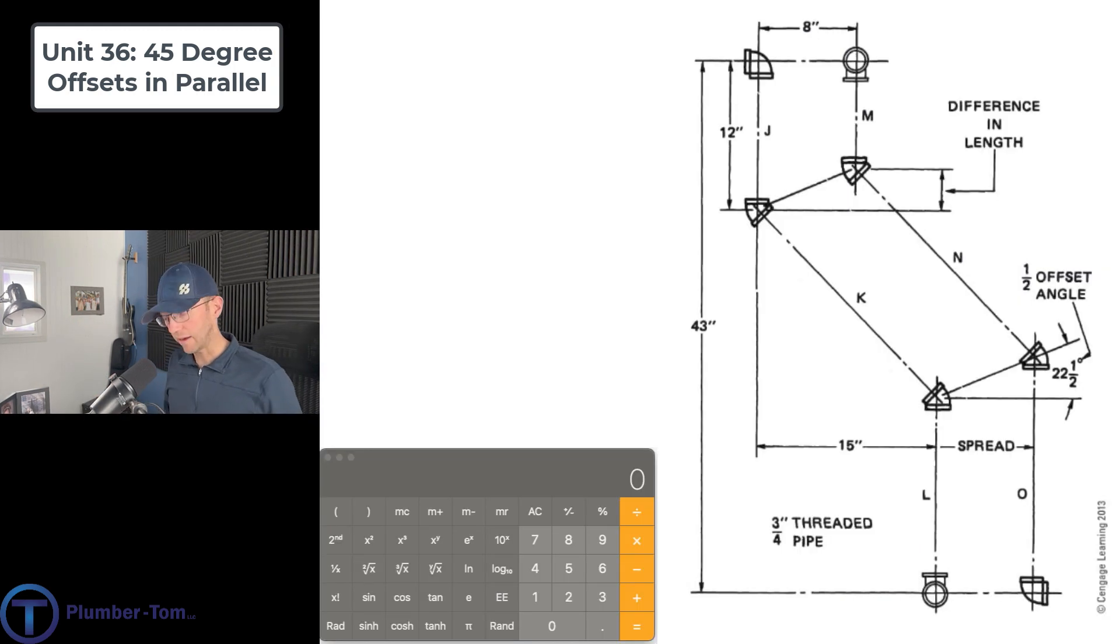So let's calculate that difference. I'm going to call it D, and D is going to equal the spread. In this case, our spread is 8 inches, and we're going to multiply that by 0.414. Let's jump down, punch that in the calculator. 8 times 0.414 is going to give us the difference of 3.312.